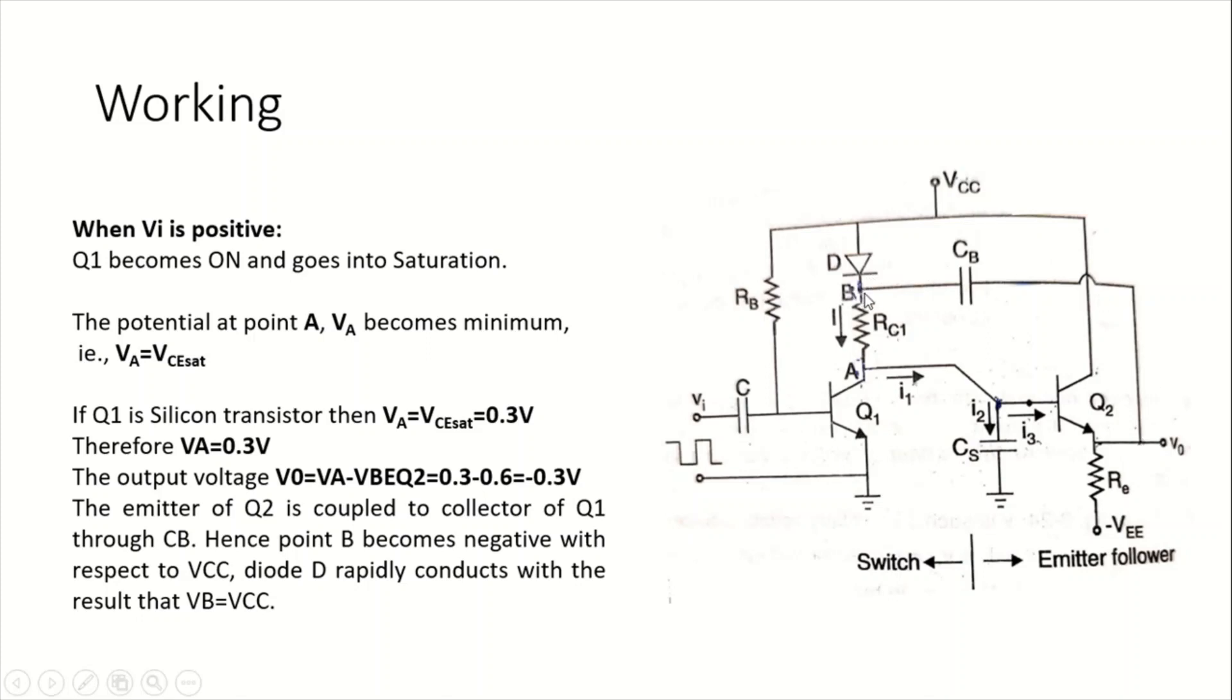What happens is we find a feedback signal from this output Vo back to the collector of Q1 transistor through capacitor CB. At point B, the potential we can find is the same as here, so it also goes negative. When this potential is negative, the diode is driven by VCC source and this diode rapidly conducts. With the result, we can find the potential at B equals VCC directly from this circuit.